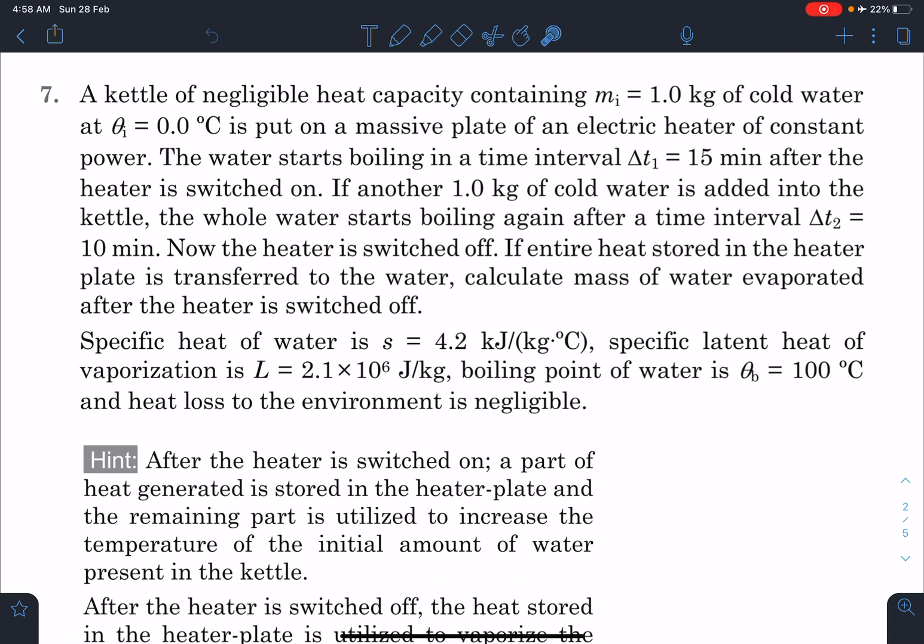Here is the problem statement: A kettle of negligible heat capacity containing m_i = 1 kg of cold water at θ_i = 0°C is put on a massive plate of an electric heater of constant power. The water starts boiling in time interval Δt₁ = 15 minutes after the heater is switched on. If another 1 kg of cold water is added into the kettle, the whole water starts boiling again after a time interval of Δt₂ = 10 minutes.